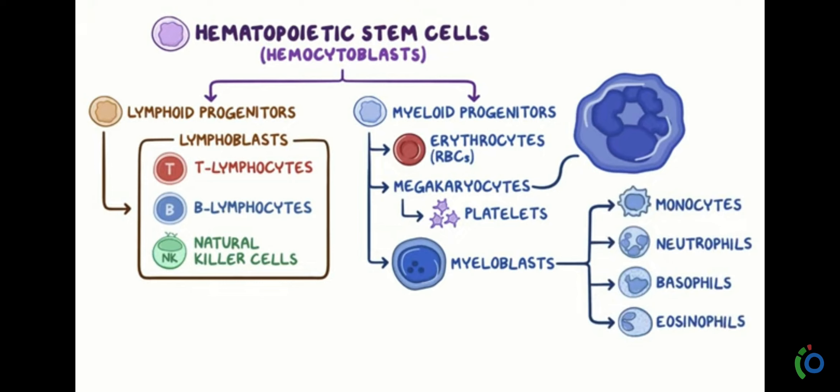Firstly, we will discuss about myeloid progenitors. In myeloid progenitors, the cells are formed and come from the bone marrow or hematopoietic stem cells, and they form cells like erythrocytes, megakaryocytes — which are like platelets — and myeloblasts, like leukocytes.